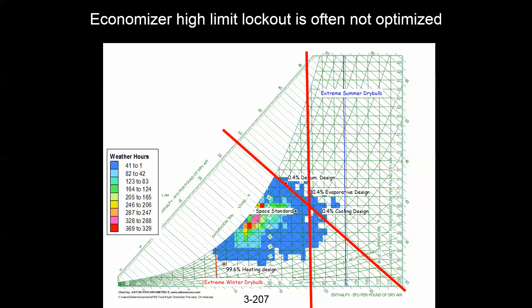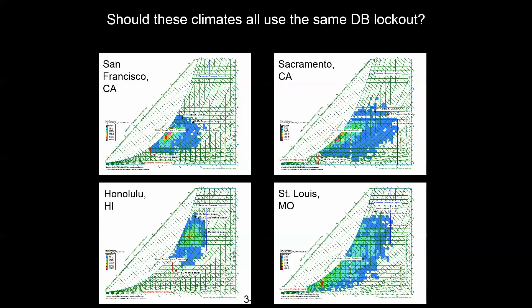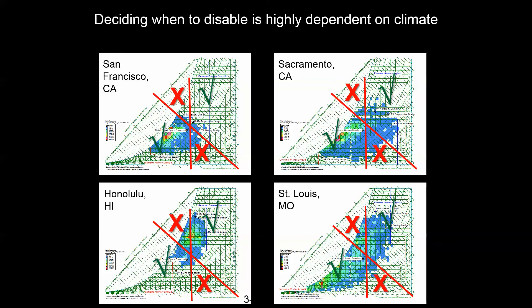Finally, the economizer lockout may not be set correctly. Even if a good dry bulb lockout keeps the economizer running when it should most of the time, applying that same lockout set point to different climates is problematic — each climate has its own specific economizer lockout that's a function of the return air conditions coming back. Finding the right lockout for each building and climate is quite tricky.